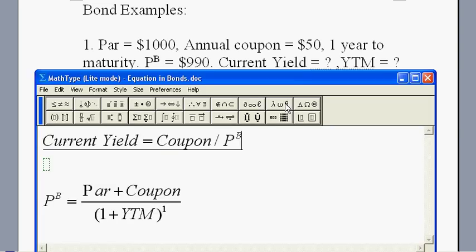Let's look at the simple numbers first. The current yield equals coupon divided by the bond price. That is, in this example, $50 divided by $990. What is that number?